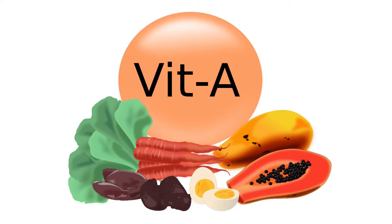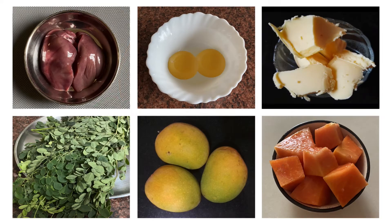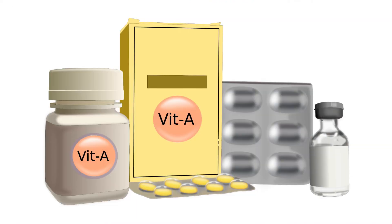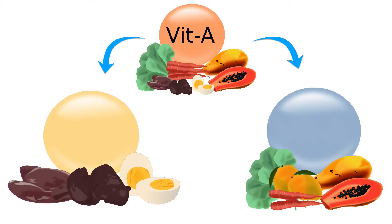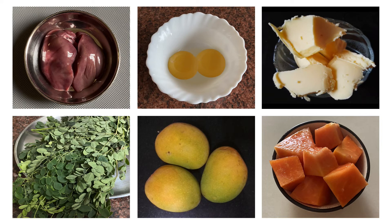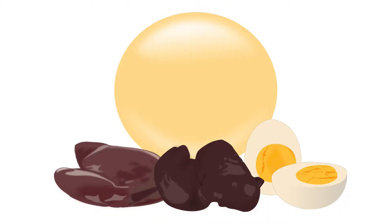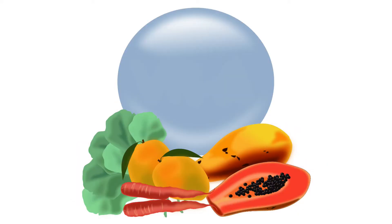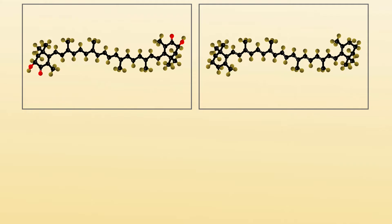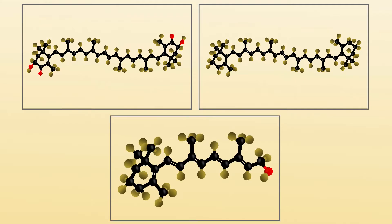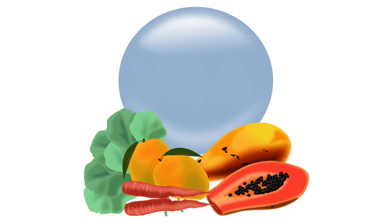Vitamin A is a fat-soluble vitamin that can be obtained through diet and supplements. Two main forms of vitamin A are found in our food. One is preformed vitamin A, which includes retinol and retinyl ester, and is derived from animal sources. The second form is provitamin A, which includes alpha-carotene, beta-carotene, and beta-cryptoxanthine, all derived from plant sources.